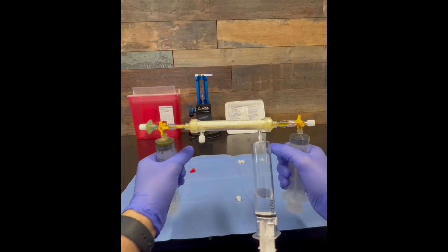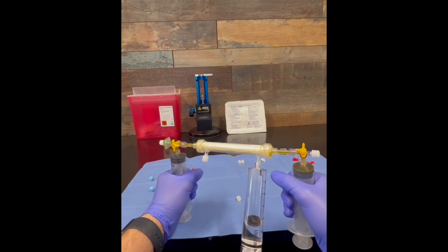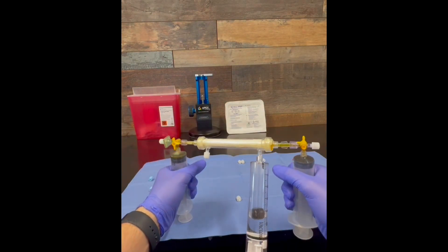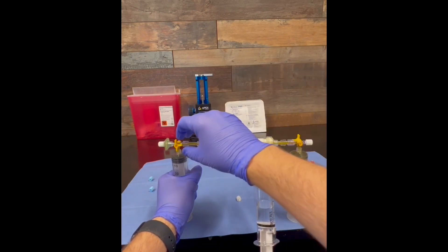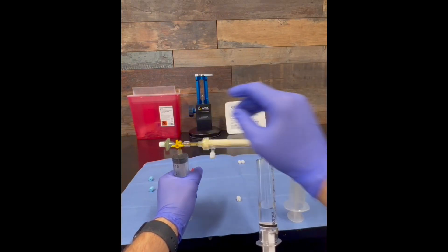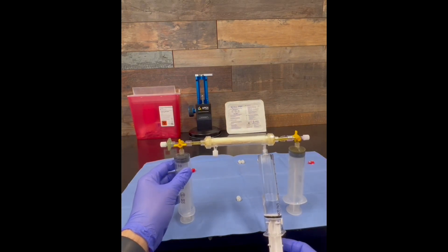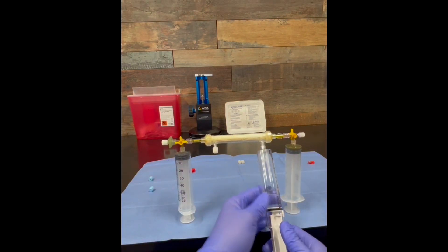Once you have no remaining platelet-poor plasma in either 60 ml syringe, push down on the plunger of the syringe attached to the side with the small green filter and orient the three-way stopcock as shown.